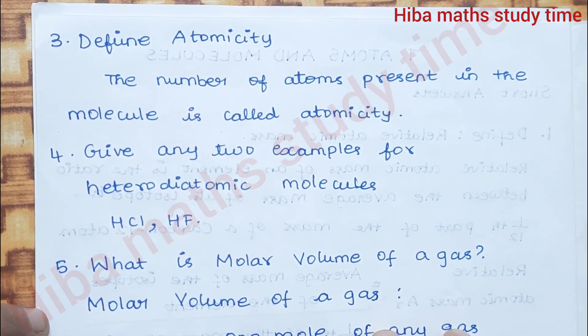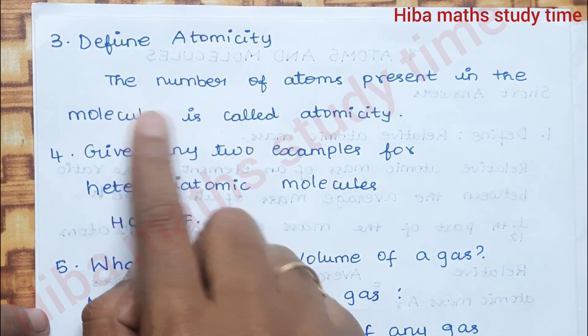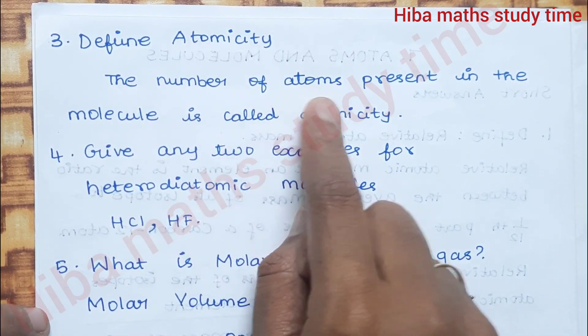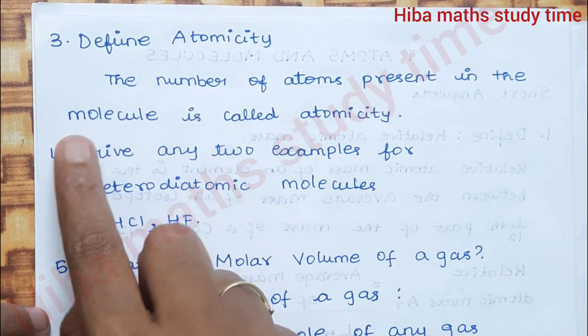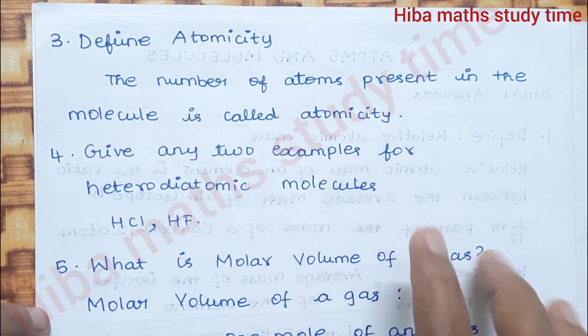Third question: Define atomicity. The number of atoms present in a molecule is called atomicity.